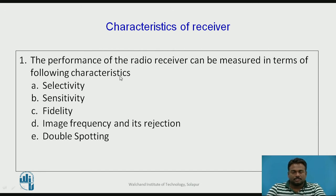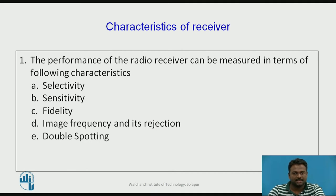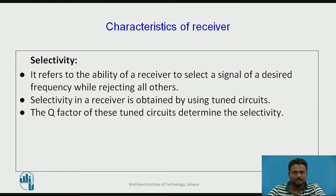Now, the characteristics of a receiver: the performance of a radio receiver can be measured in terms of the following characteristics — first, selectivity; second, sensitivity; third, fidelity; fourth, image frequency and its rejection; fifth, double spotting. These are the performance parameters of the radio receiver. Let us discuss each characteristic one by one.